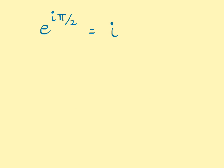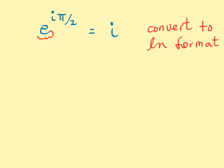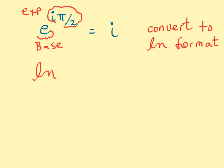Now that we've established that i is equal to e raised to the exponent iπ/2, and recognizing that this is in the base of natural logarithm, we're going to convert this exponential equation into its equivalent ln form. We know this is our base and this is our exponent. Since ln's are equal to exponents with a natural base e, we write ln of i is equal to the exponent iπ/2. So ln of i is equal to i times π/2.